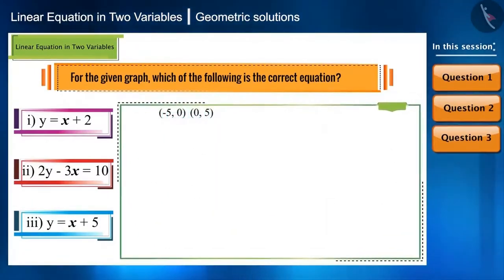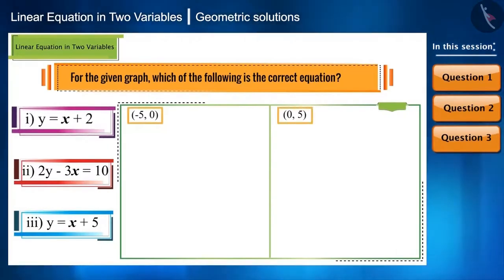Here the line intersects the x axis at minus 5 and the y axis at 5. That is, we got two coordinates of x, y. That is minus 5, 0 and 0, 5. Now, we will put both these values in all the equations and find out which equation is true for these values.